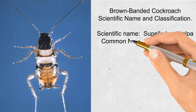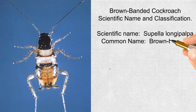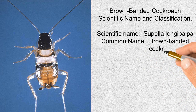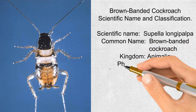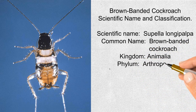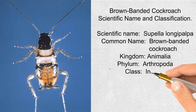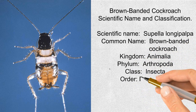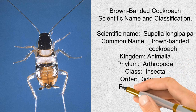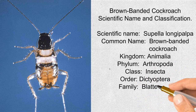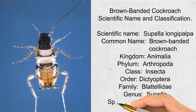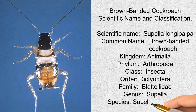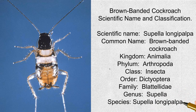Brown-banded cockroach classification: kingdom Animalia, phylum Arthropoda, class Insecta, order Dictyoptera, family Ectobiidae, genus Supella, species Supella longipalpa.